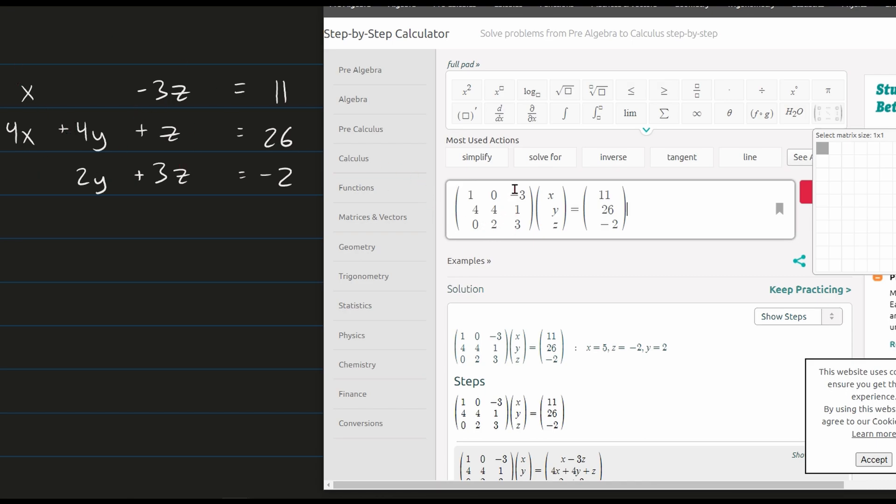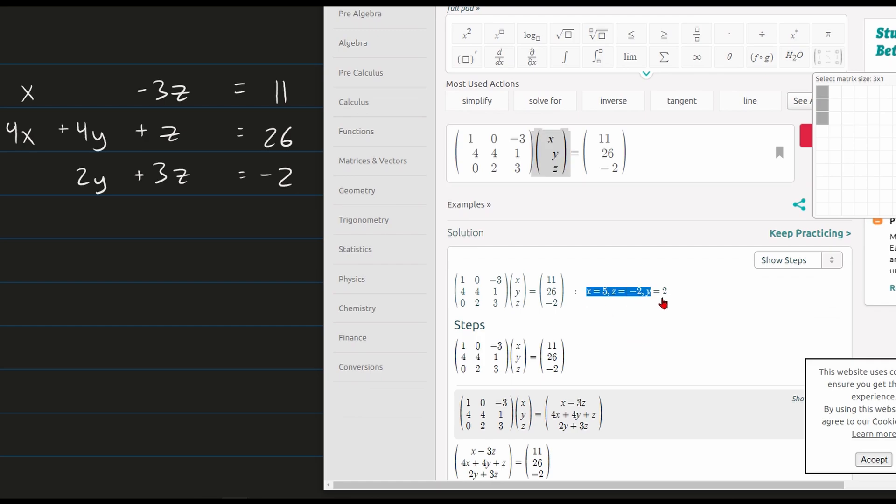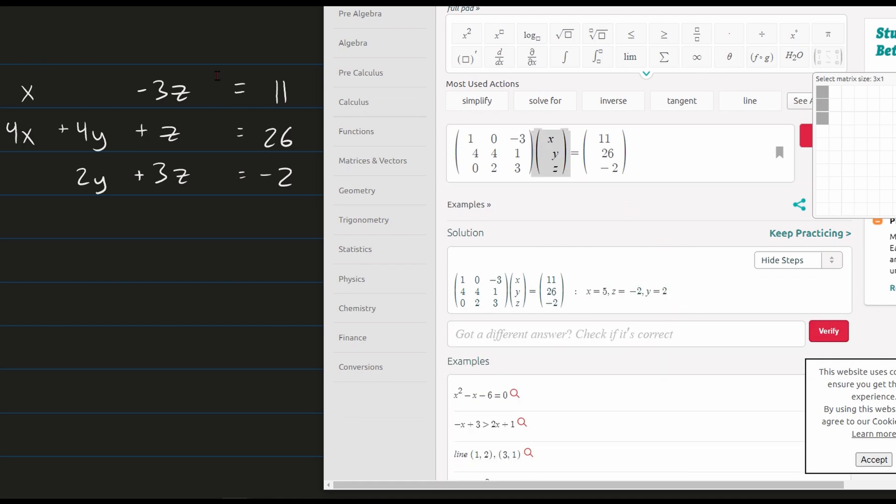Now we know we have X, Y, and Z's, so we're going to multiply this by a matrix of X, Y, and Z. This is going to be a 3 by 1. And then we set it equal to everything that we have over here, which is the 11, 26, negative 2. And it's going to give us this result. So that's how we would do matrices in SymboLab.